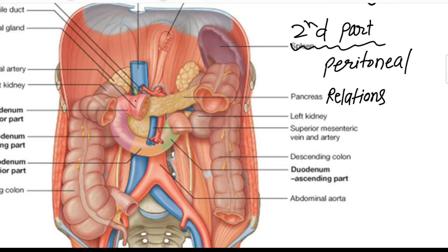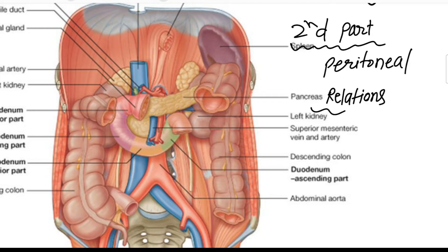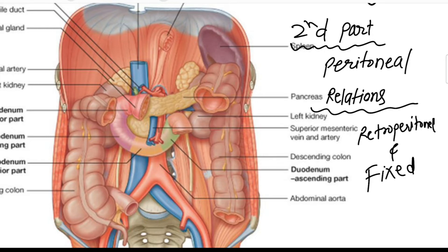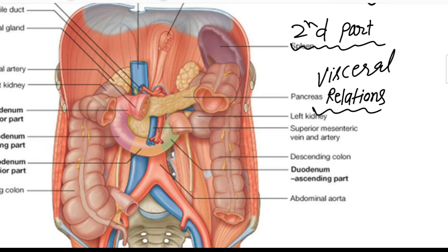Now we will see the second part of the duodenum. This part extends from the superior duodenal flexure down to the inferior duodenal flexure, lying opposite to the L2 and L3 vertebrae. Regarding peritoneal relations, the second part is mostly retroperitoneal and fixed — the full anterior surface is covered by the peritoneum, except at the midline where it comes in contact with the colon.